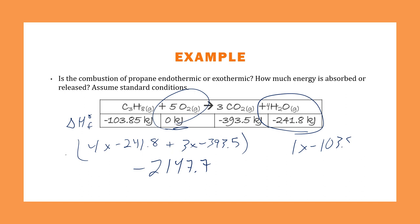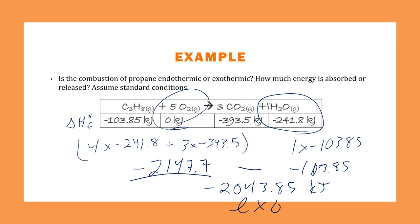So one times the negative 103.85. So negative 103.85. And then you would do products minus reactants. And when you subtract that, you get negative 2043.85 kilojoules. And so therefore, it would be exothermic because of that negative.